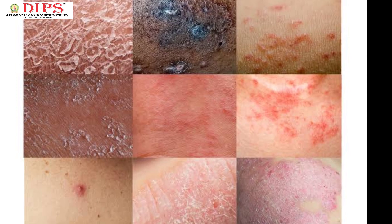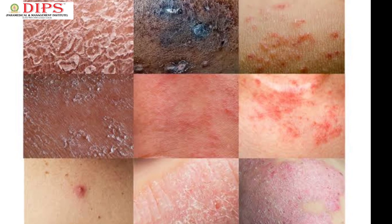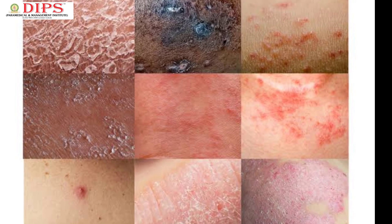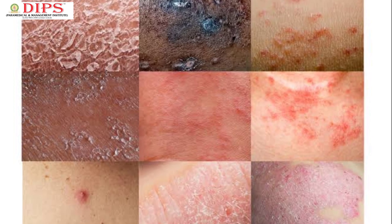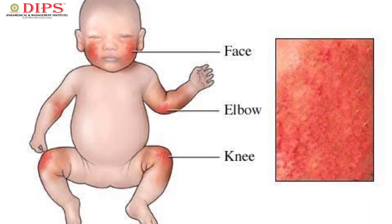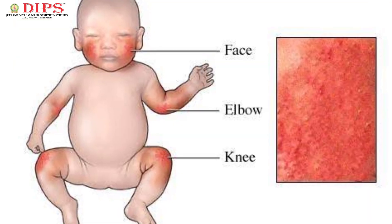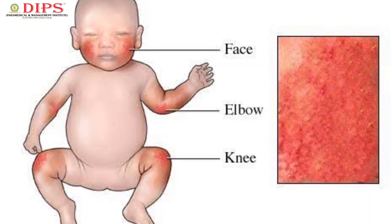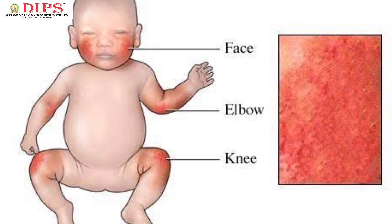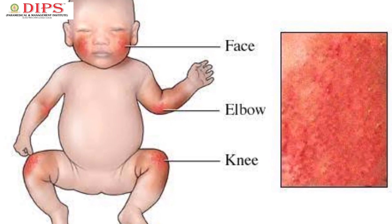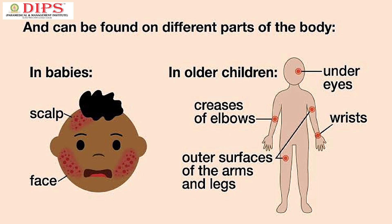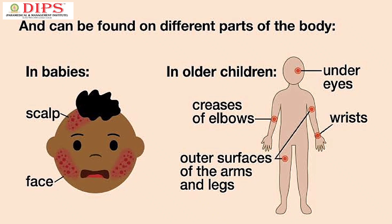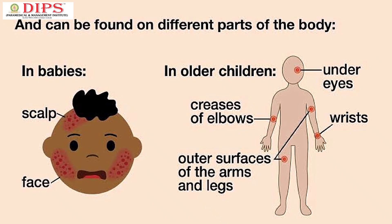Your skin may also be red, dry, cracked and leathery. In children, the itchy rash can lead to an oozing, crusting condition mainly on the face and scalp. It can also happen on their arm, leg, back and chest.